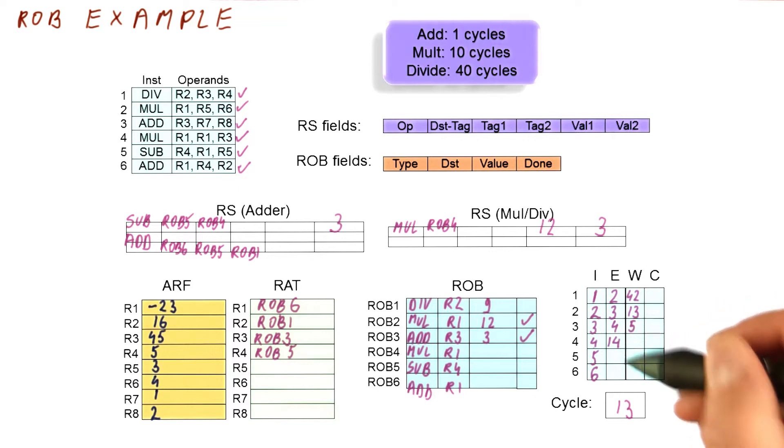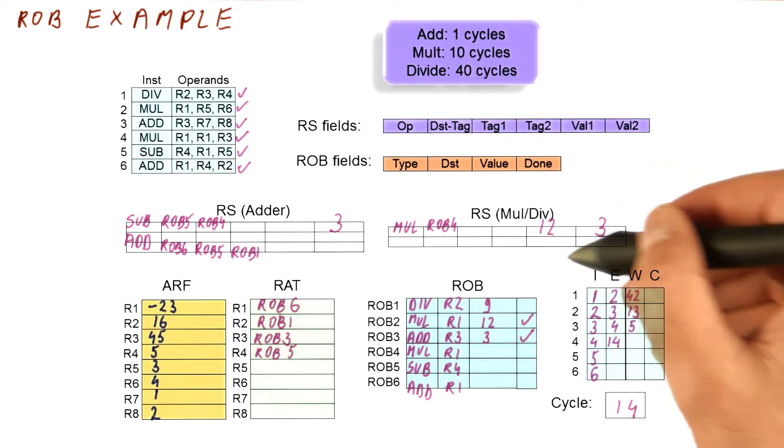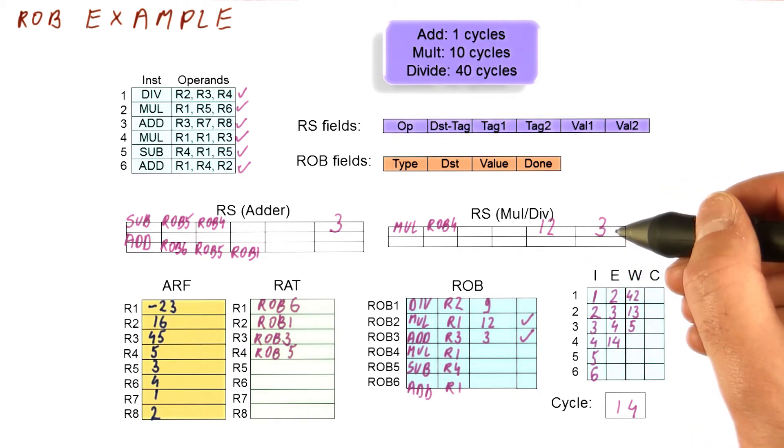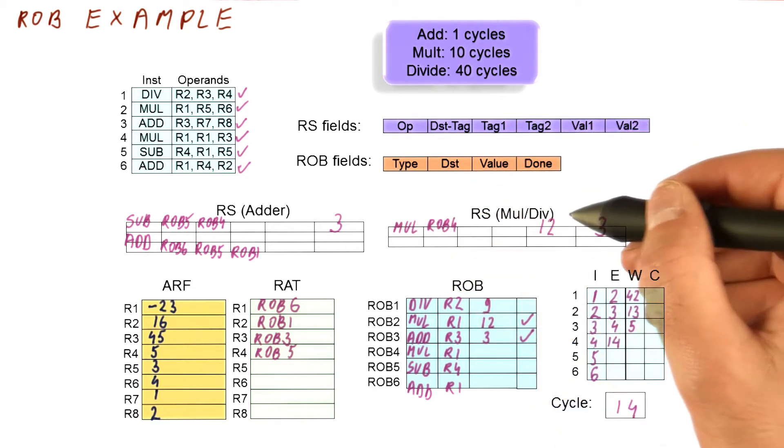So this concludes what happens when we broadcast the value in cycle 13 for the rob2 instruction. What now happens is, again, in cycle 14, we begin executing this multiplication. And because it has begun executing in this cycle, this reservation station is already free. It was freed when we dispatched in the previous cycle.